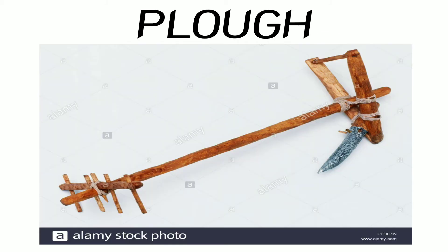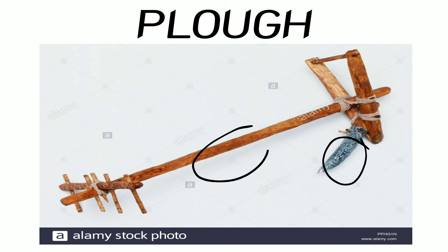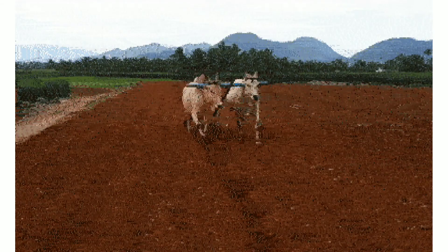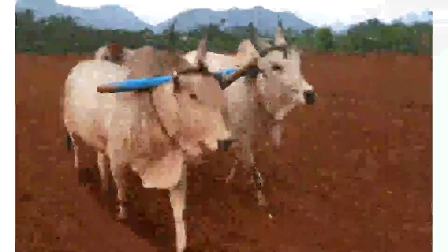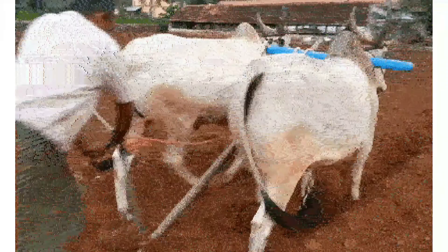The plough contains a strong triangular iron strip called the ploughshare. The main part of the plough is a long log of wood called the plough shaft. There is a handle at one end of the shaft. The other end is attached to a beam which is placed on the bull's neck. One pair of bulls and a man can easily operate the plough.